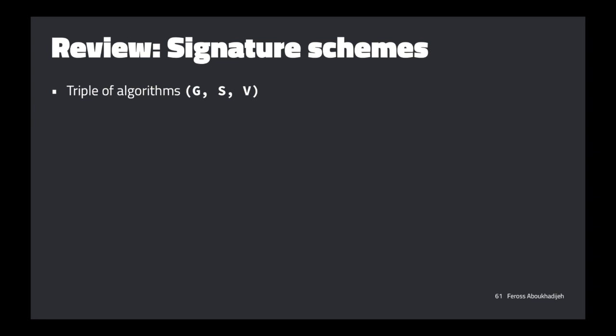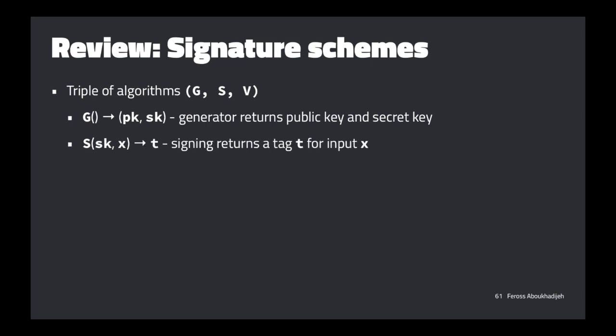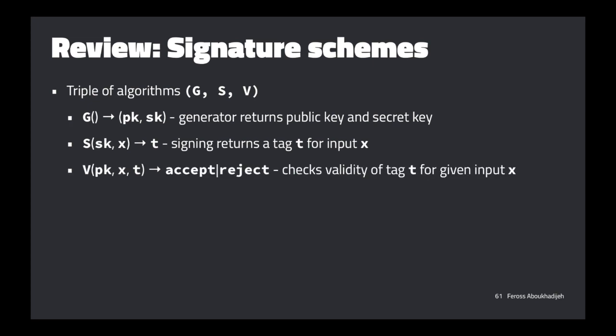Let's quickly review signature schemes. We have a triple of algorithms: G, S, and V. G is the generator — when we call it, we get out a public key and a secret key, which are randomly picked but tied together. The signing algorithm S takes the secret key and some input X, and outputs a tag T. The verification algorithm V takes the public key, input X, and a tag T, and returns 'accept' if the tag was generated by the owner of the secret key.